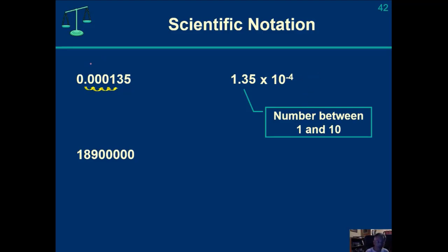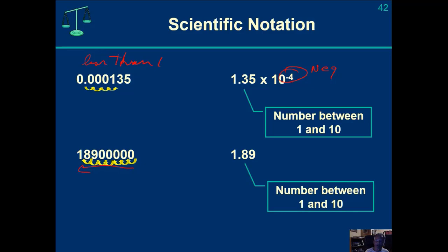If the number is less than 1, the exponent will be negative. On the other hand, if the number is greater than 1, we imagine a decimal place just to the right of the last digit and move it to the left — 1, 2, 3, 4, 5, 6, 7 places — so we write this as 1.89 times 10 to the positive 7. That's a quick review of scientific notation, also known as exponential notation, which will be handy in this course.